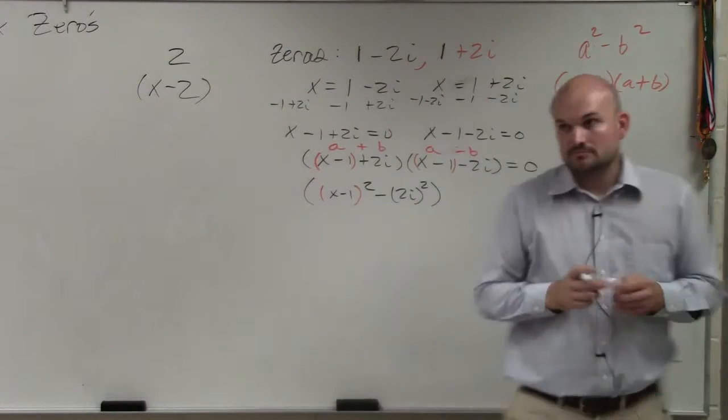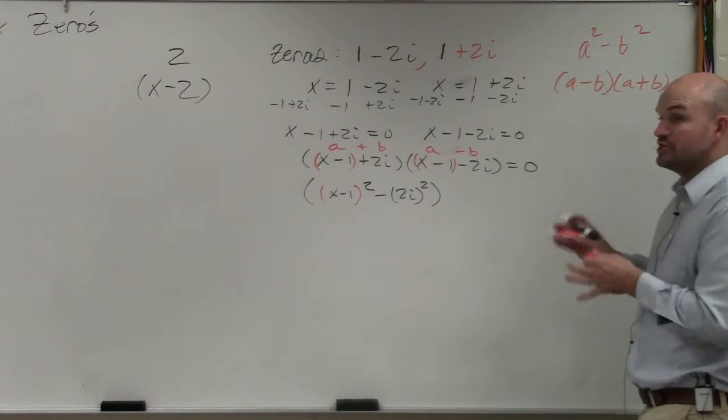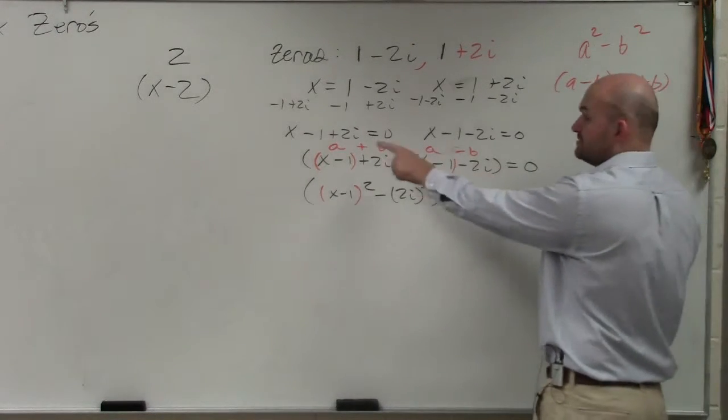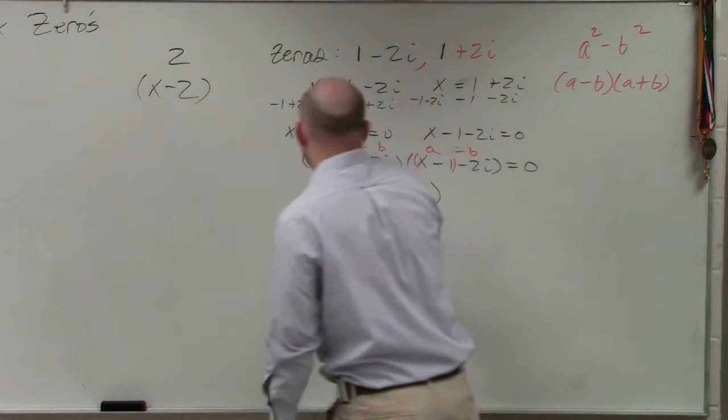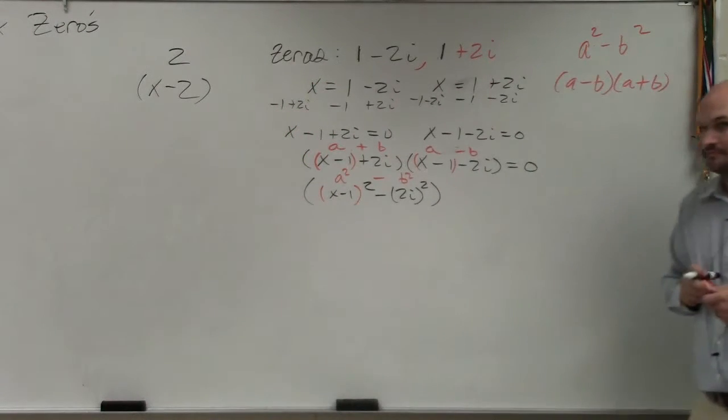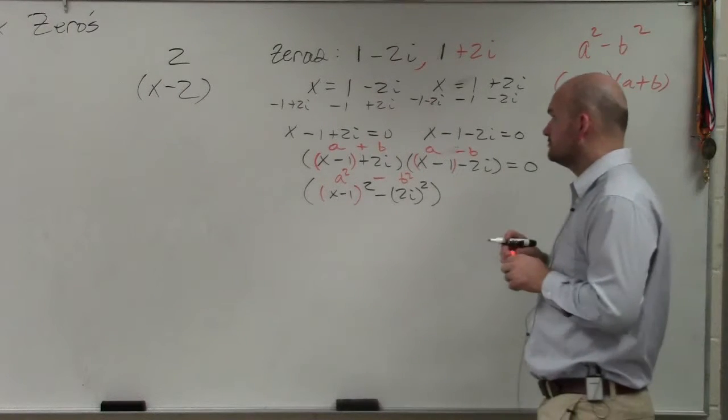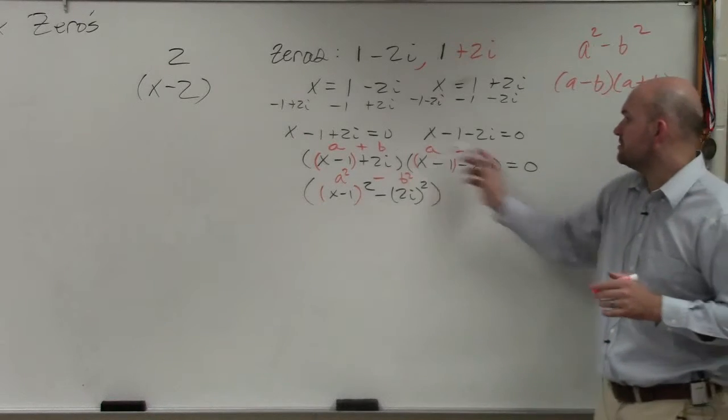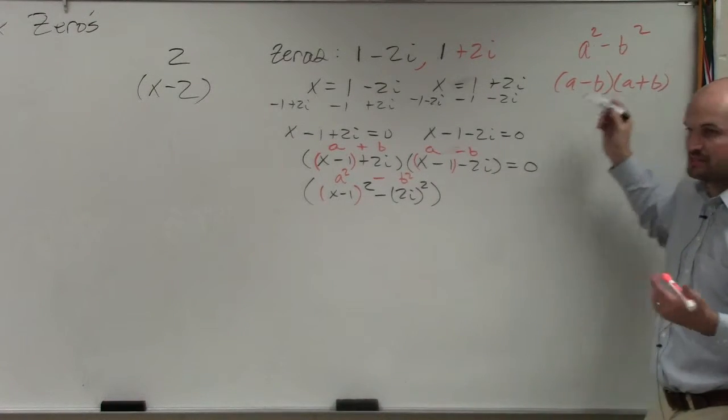Do you guys agree that x minus 1 and x minus 1 is kind of like the a? And 2i is kind of like the b? And then it's plus and then it's minus? So in reality, to write that, I can just do it's a squared minus b squared. So therefore, it's x minus 1 squared minus 2i squared. Just remember what a and b is. It's plus and minus. I haven't simplified it yet. a squared minus b squared.